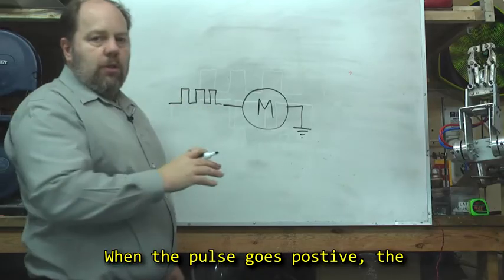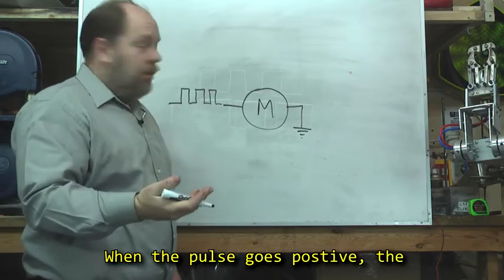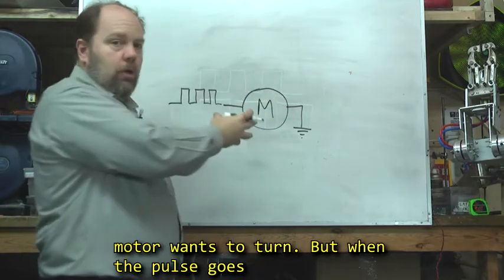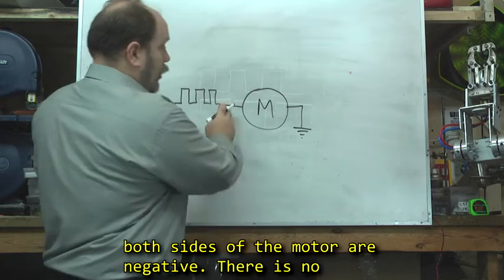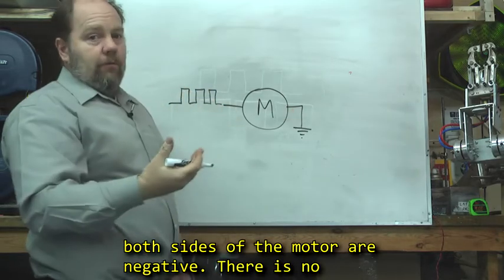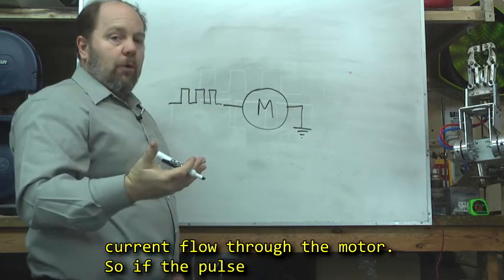When the pulse goes positive, the motor wants to turn. When the pulse goes negative, the motor doesn't do anything, because both sides of the motor are negative. There is no current flow through the motor.